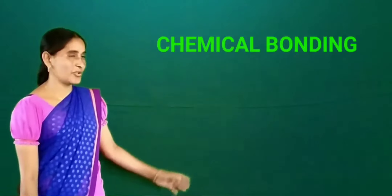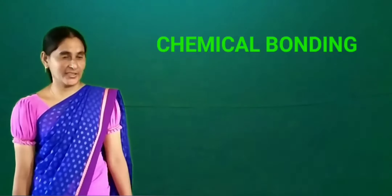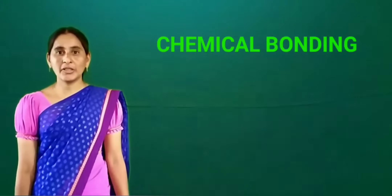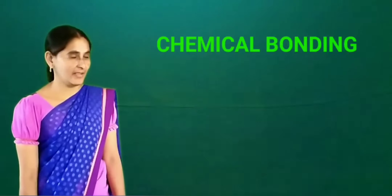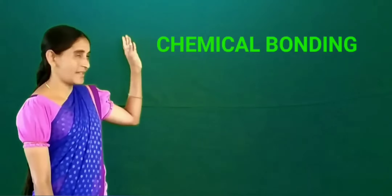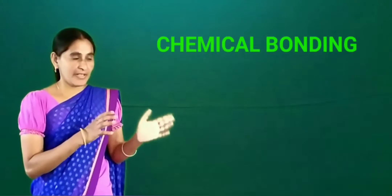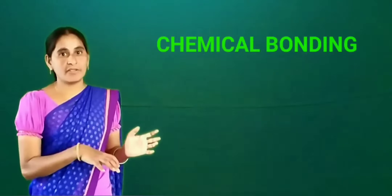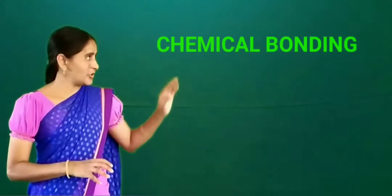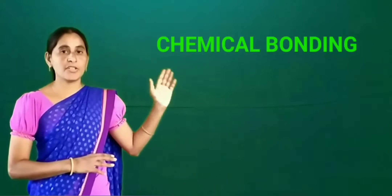Hi children, now we are here to enjoy the online class regarding chemical bonding. It is a very important and very easy chapter in the 10th class syllabus. You will learn from the beginning of chemistry when it starts from 8th class, you will get some formulas like NaCl, MgCl2, KCl3, Na2O, BbCl2.